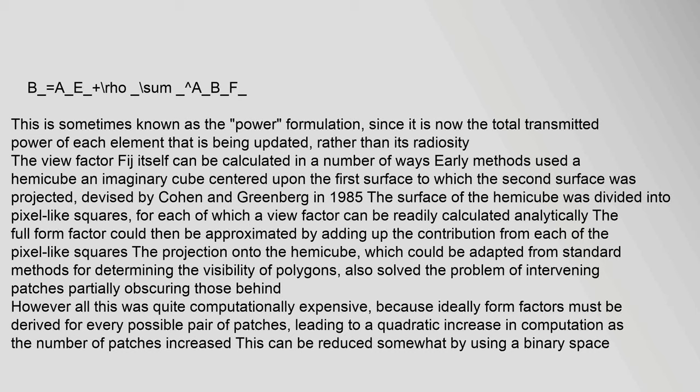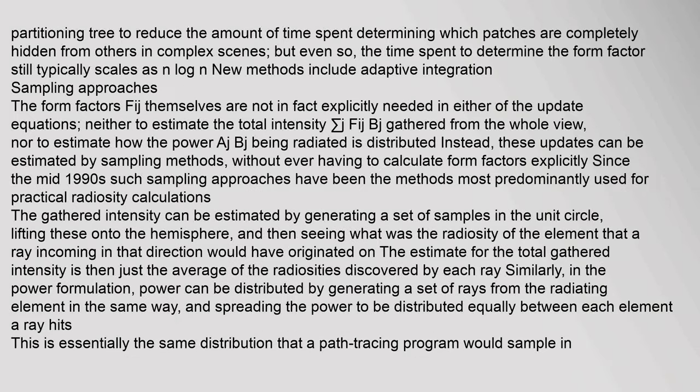However, all this was quite computationally expensive because ideally form factors must be derived for every possible pair of patches, leading to a quadratic increase in computation as the number of patches increased. This can be reduced somewhat by using a binary space partitioning tree to reduce the amount of time spent determining which patches are completely hidden from others in complex scenes, but even so the time spent to determine the form factor still typically scales as N log N. New methods include adaptive integration.